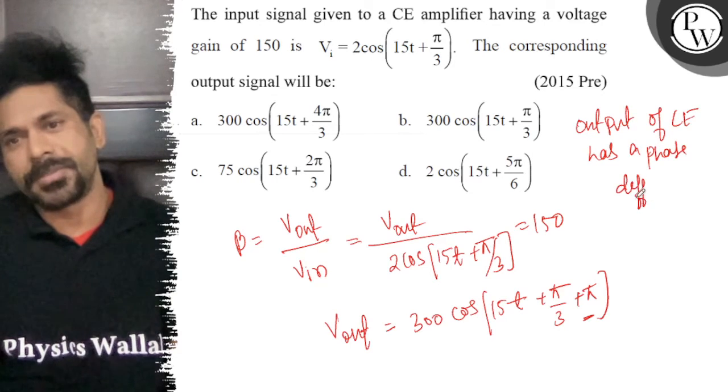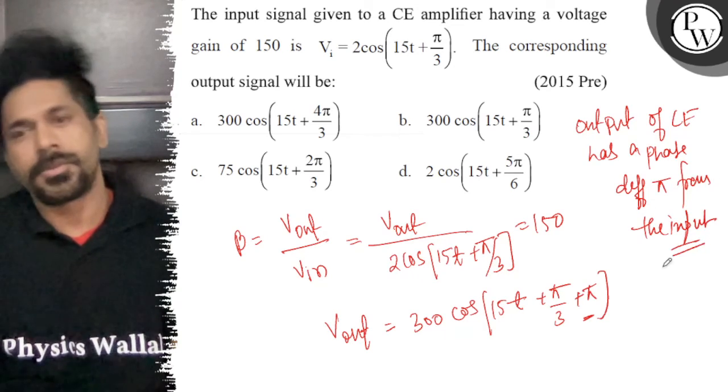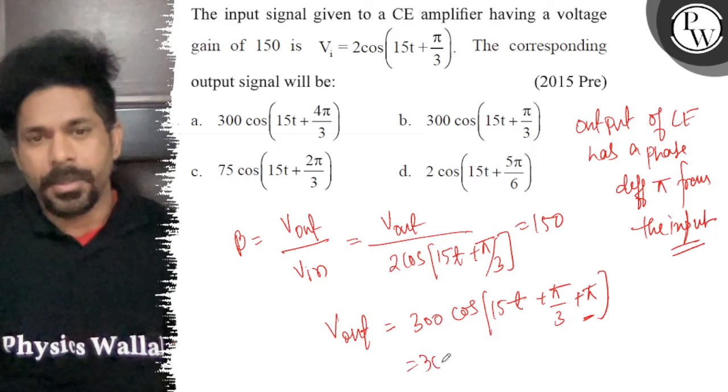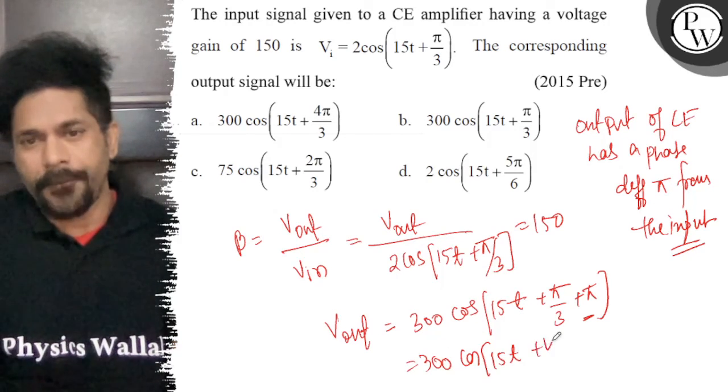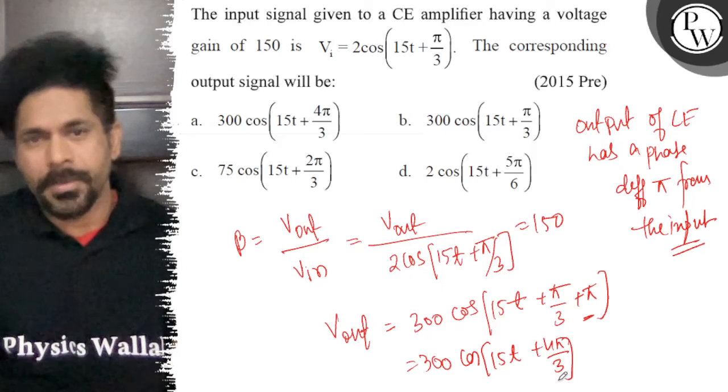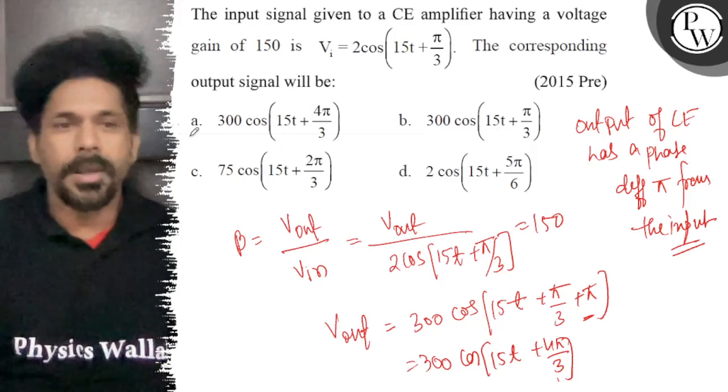There's a phase difference of π from the input. So here the answer is 300 cos(15t + 4π/3). That is the right answer. If we see here, the answer is A. All the best.